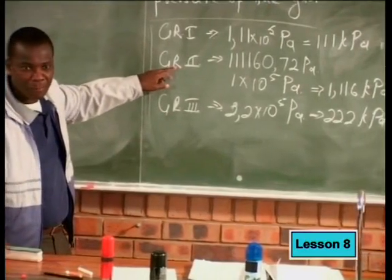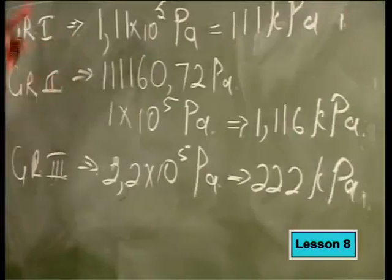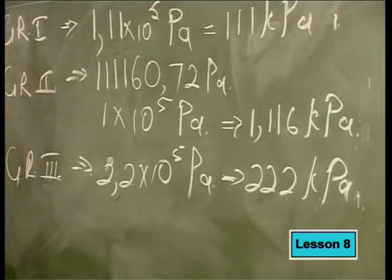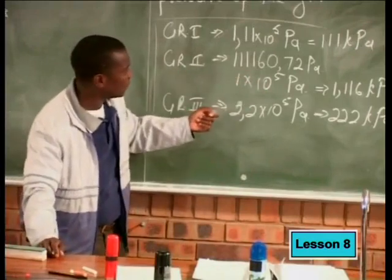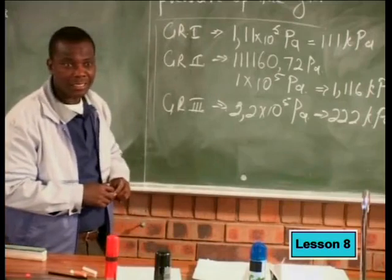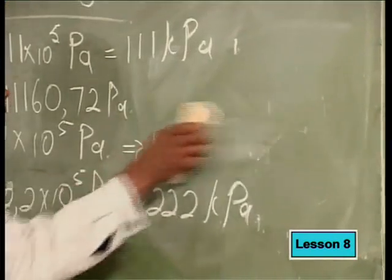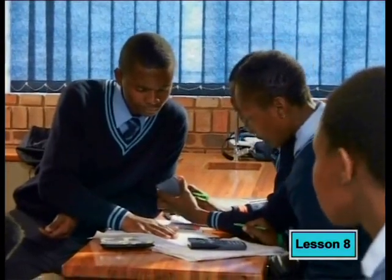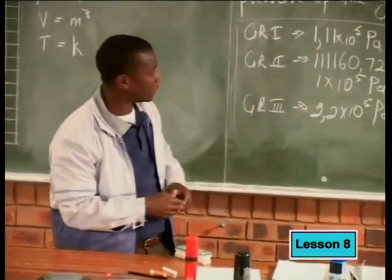Let's get to group 2. Group 2 had 111,160.72 Pascals. I wanted you to give it in scientific notation, and you had it as 1 times 10 to the power of 5 Pascals. Then I asked you to change it to kilopascals. You made a mistake there. Using your calculators, what answer do you get? The correct answer is 111.2. Rounding off — that's less than 5, so we take it to 111.2.